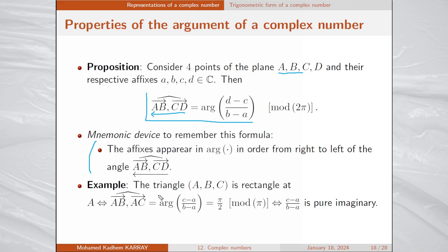Let's apply this for an example. Consider a triangle ABC. This triangle is right-angled at A if and only if the angle BAC equals arg((c - a) / (b - a)) = π/2. This is equivalent to saying that the complex number (c - a) / (b - a) is purely imaginary, showing how this property characterizes geometric properties in a simple way.